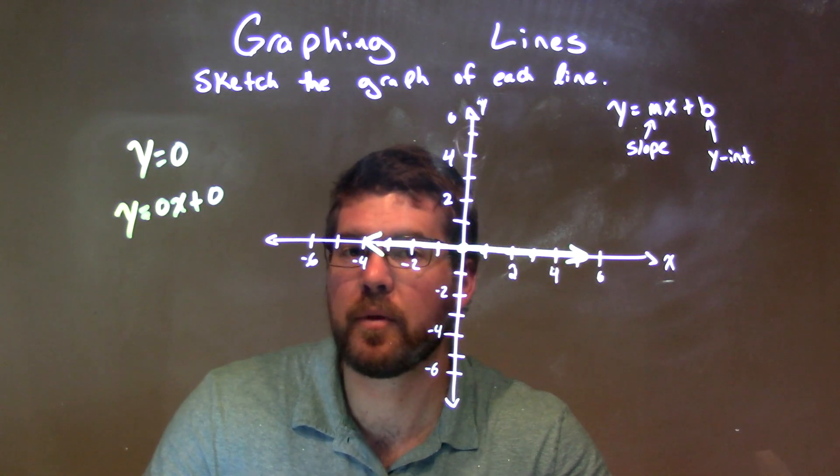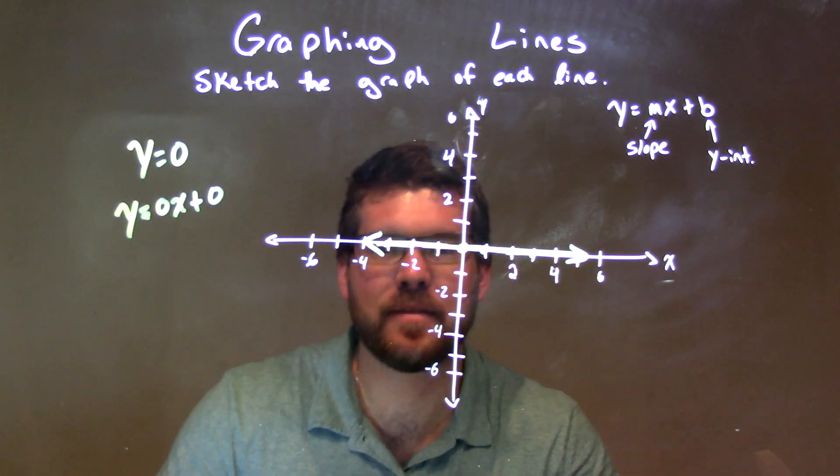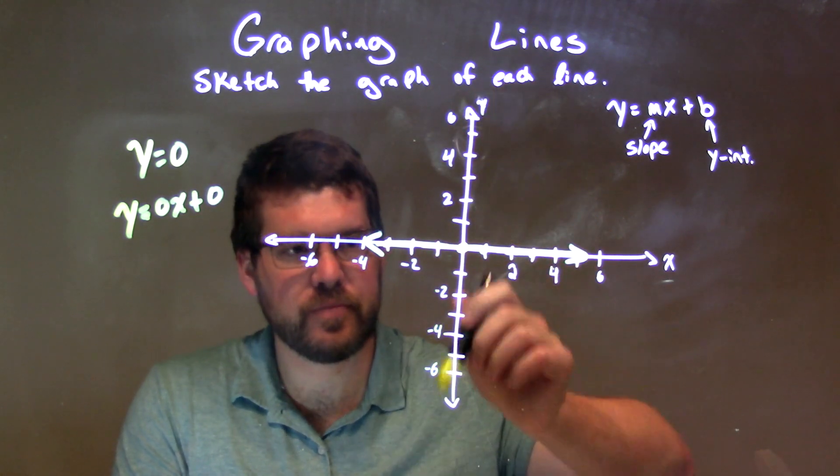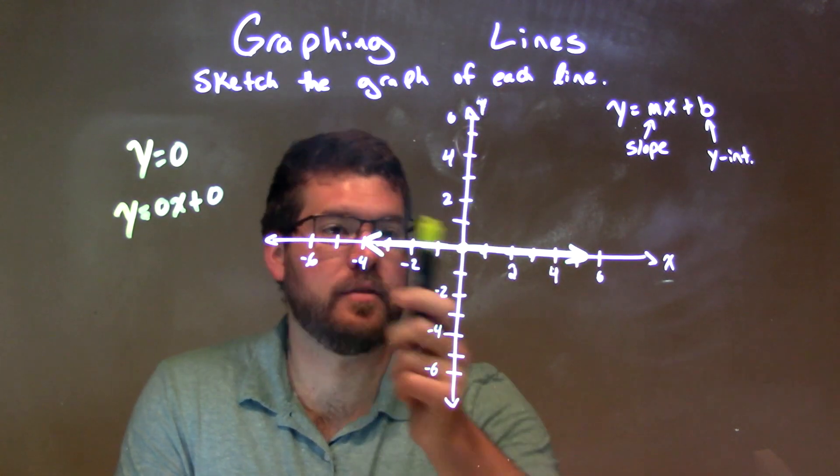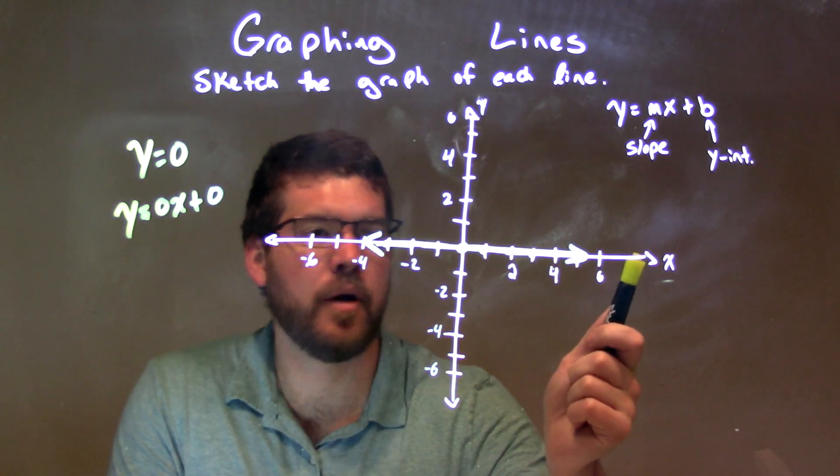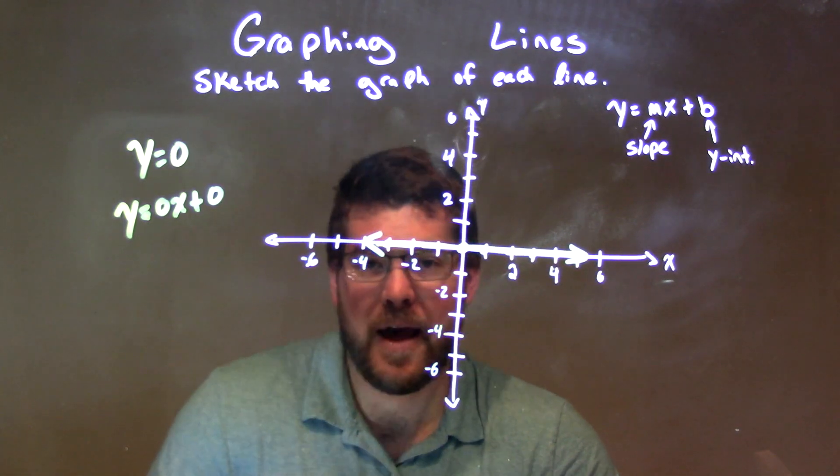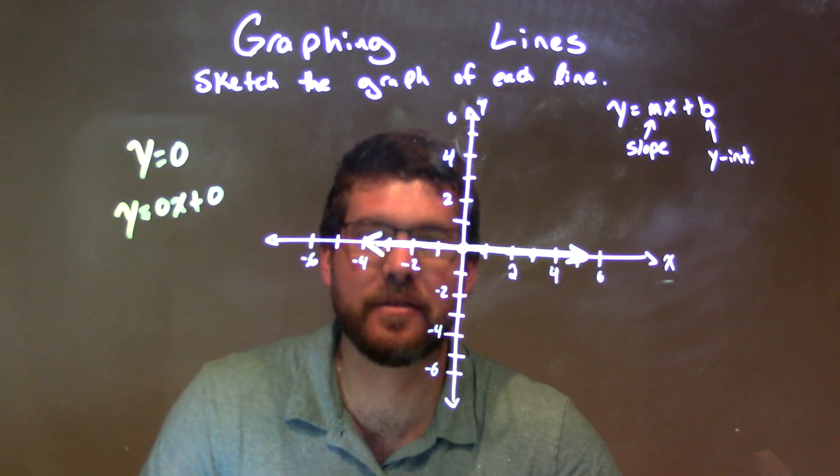Quick recap: when we have y equals 0, that's going to be a horizontal line that goes through whatever our number is through the y-axis. In this case, 0. Put a dot right there at 0. We make our horizontal line, which basically is the x-axis. And there we have our graph and our final answer.